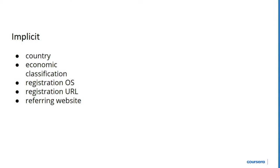In order to do that, we need what we call the cold start onboarding process, to get people to at least some content that might be relevant to them. We look at a whole bunch of implicit features — we get as much as we can from just the standard user flow: the country they came in from (which you can get from their IP address), some level of economic classification, the registration URL, the referring website, and so on.